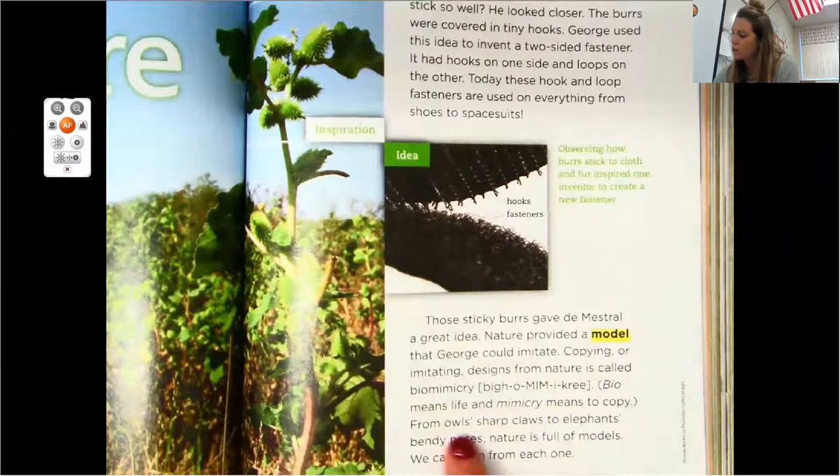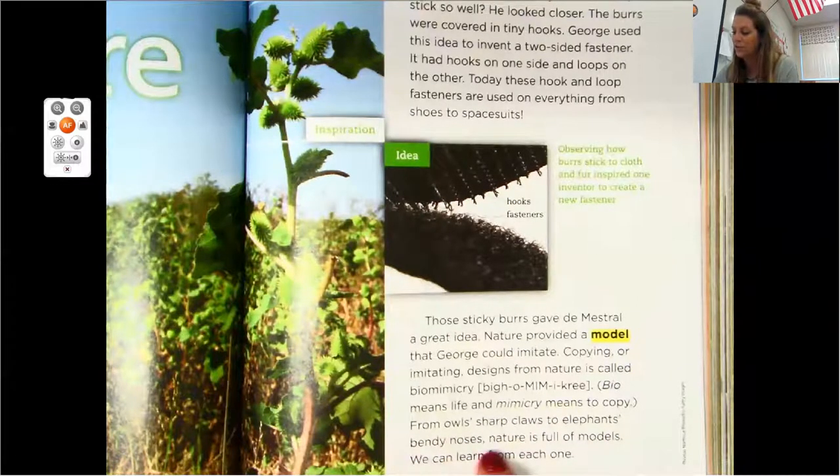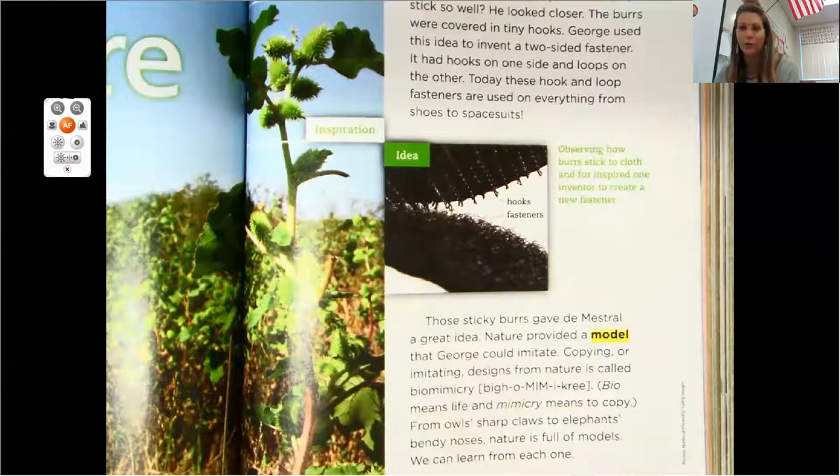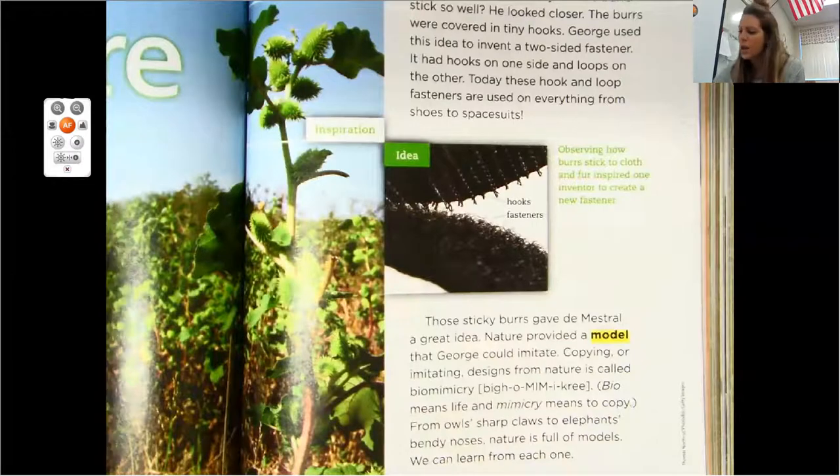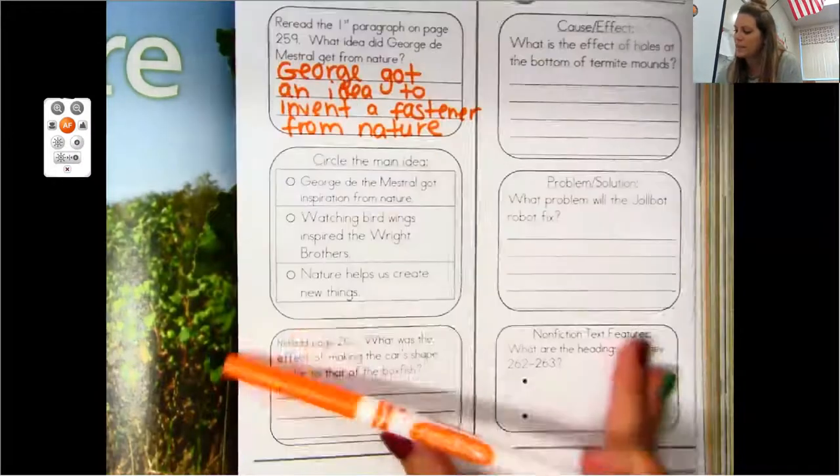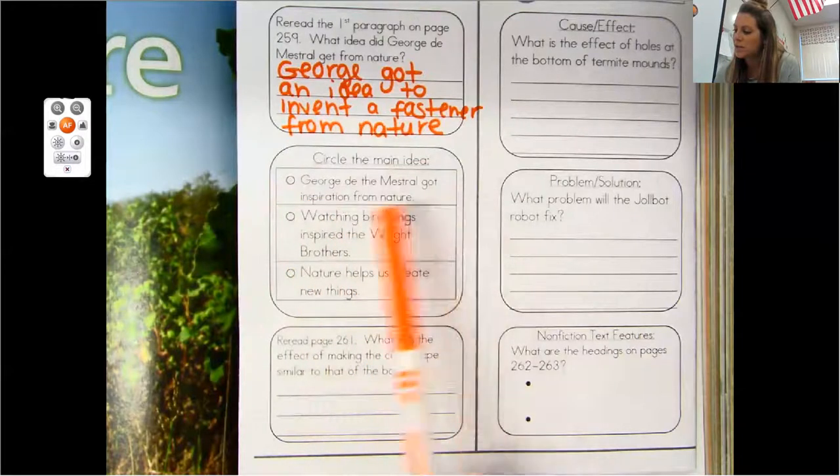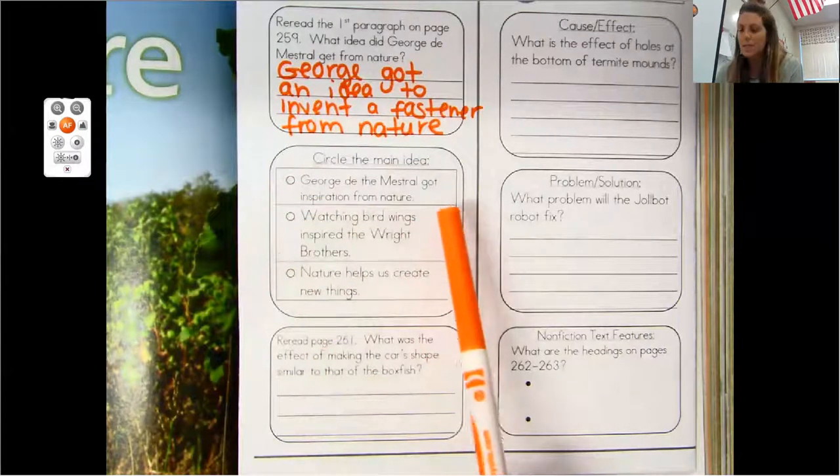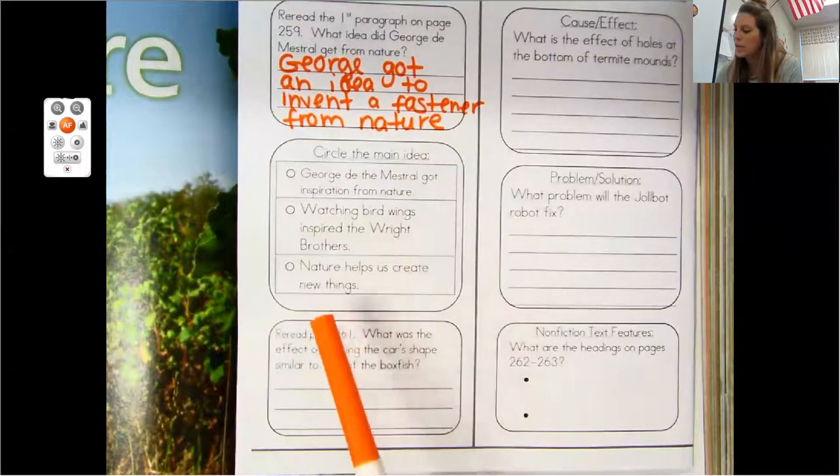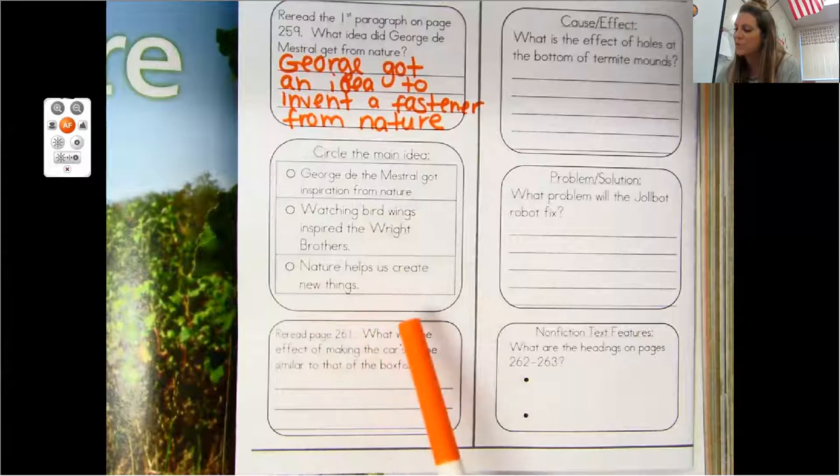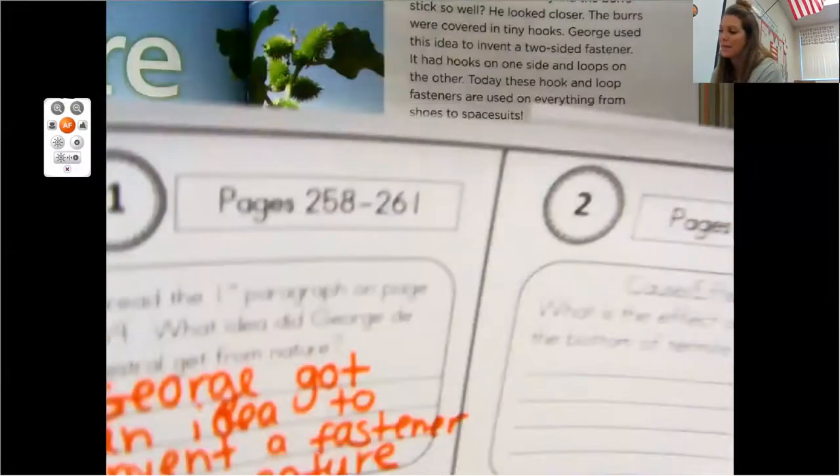Bio means life and mimicry means to copy. From owls' sharp claws to elephants' bendy noses, nature is full of models. We can learn from each one. So what do you think? What do you think the main idea is here? That George Day Mestral got inspiration from nature? That watching bird wings inspired the Wright brothers? Or nature helps us create new things? Let's go ahead and keep reading, but think about that main idea.